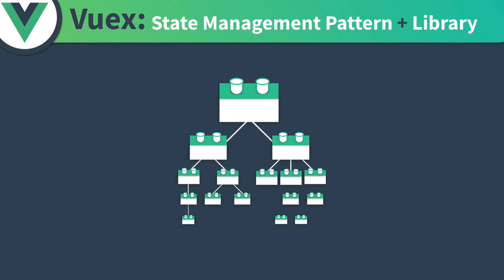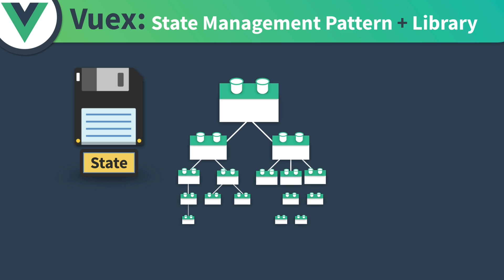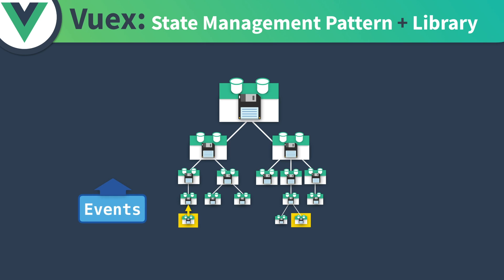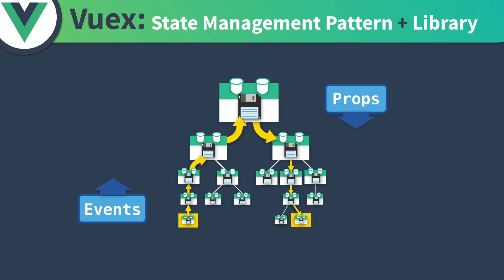When we talk about state, we mean the data that your components depend on and render — things like blog posts, to-do items, and so on. Without Vuex, as your app grows, each Vue component might have its own version of state. But if one component changes its state and a distant relative is also using that same state, we need to communicate that change. There's the default way of communicating events up and passing props down to share data, but that can become overly complicated.